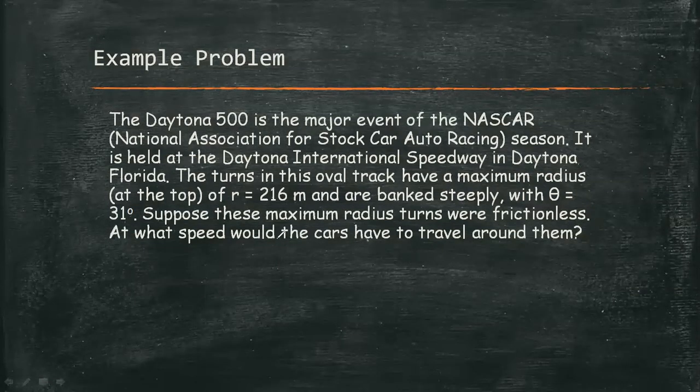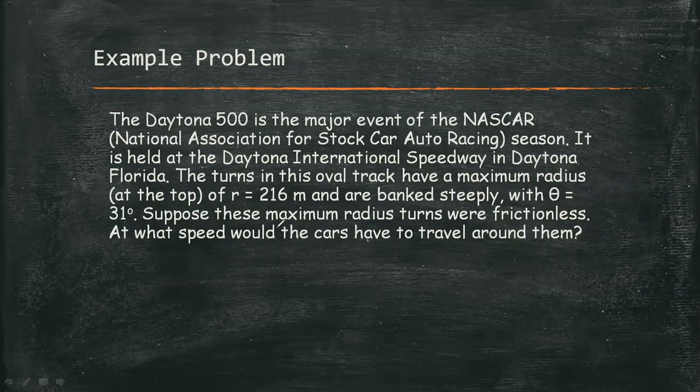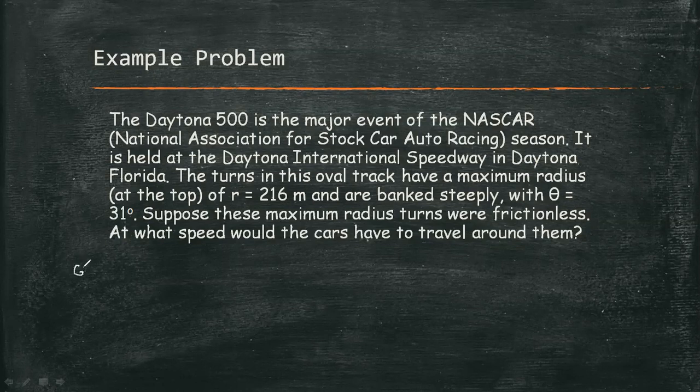At what speed would the cars have to travel around them? So the given are radius of 216 meters and angle of 31 degrees. And we are looking for the velocity.